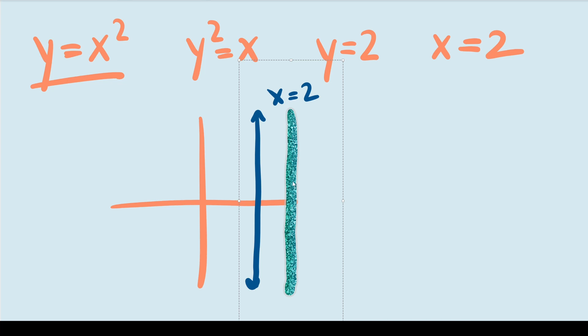So putting everything together, y equals x squared does pass the vertical line test. So it is a function. Y squared equals x does not meet the expectations. So it's not. Y equals 2 is once again a function because it passes the vertical line test. And x equals 2 doesn't pass. So it's not a function.